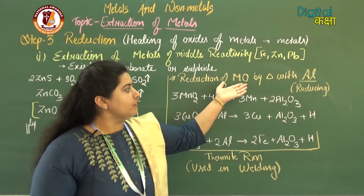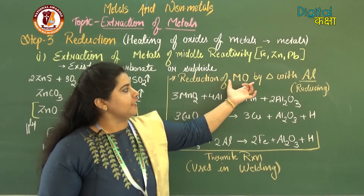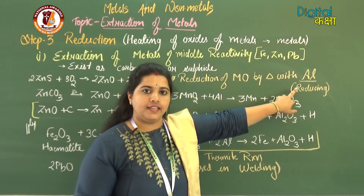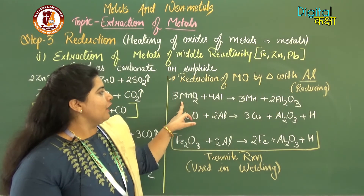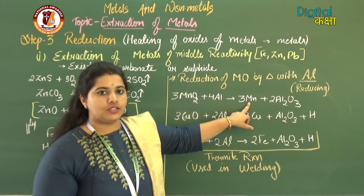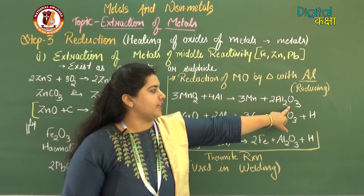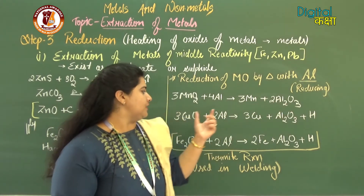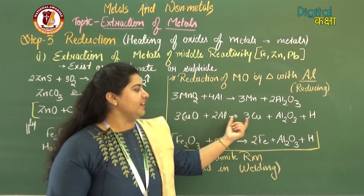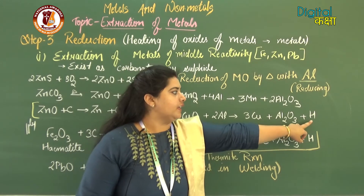Instead of carbon, aluminium can also be used as a reducing agent to convert metal oxides to metals. For example, manganese oxide (MnO2) treated with aluminium gives pure manganese and aluminium oxide (Al2O3). Similarly, copper oxide (CuO) treated with aluminium yields pure copper and aluminium oxide.